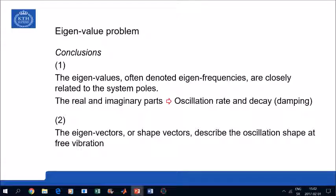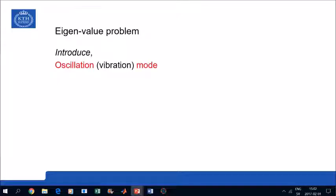Secondly, the eigenvectors, shape vectors, describe the oscillation shape when the system vibrates at free vibration. And that means that we can introduce a new concept, which we denote an oscillation or vibration mode. And it's defined by the so-called mode parameters.